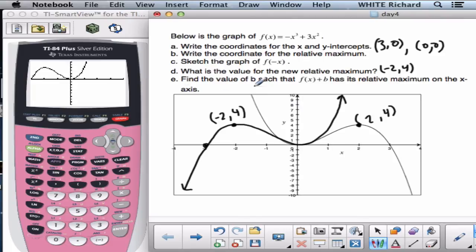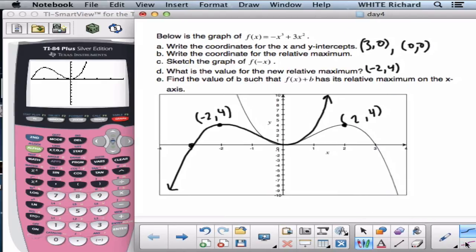It says find the value of b such that f of x plus b. So now we're back to the original. f of x plus b. Talking about the original one. f of x. And I need to find the value of b such that there's a relative maximum on the x axis. And all I'm allowed to do is this transformation b. This translation only moves the graph up and down.